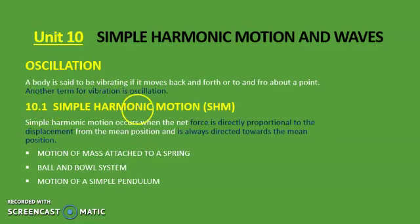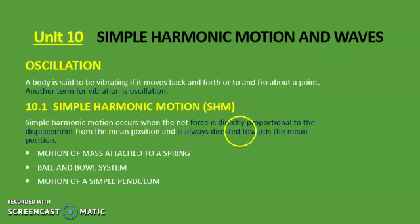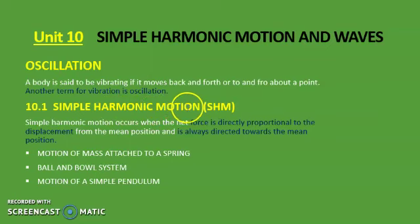The first topic is Simple Harmonic Motion. SHM is the abbreviation of the topic. The definition says: Simple Harmonic Motion occurs when the net force is directly proportional to the displacement from the mean position and is always directed toward the mean position. The very first condition or requirement of simple harmonic motion is that the body must be vibrating — the body should not be rotating, circulating, having random motion, or linear motion. In simple harmonic motion, the body should be vibrating only.